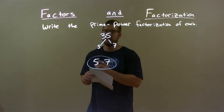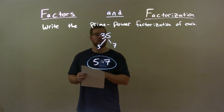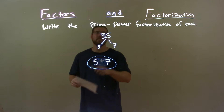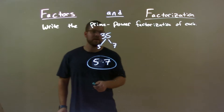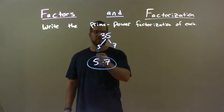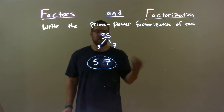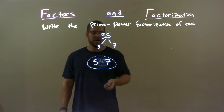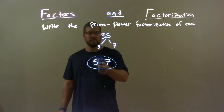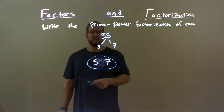So, quick recap. We're looking at number 35 and finding the prime power factorization. Well, 35 is just 5 times 7. 5 and 7 are both prime numbers, so we're done. Our final answer: 5 times 7.